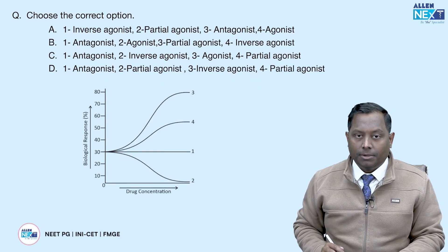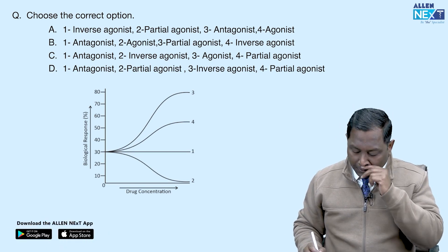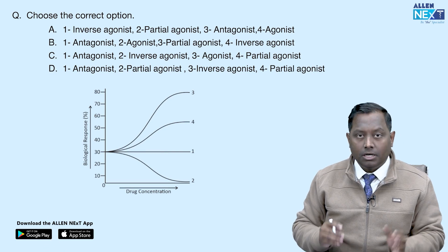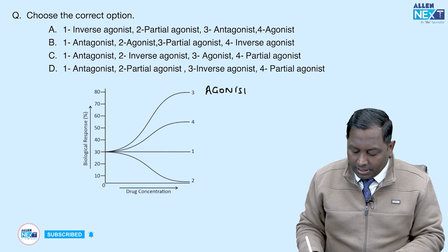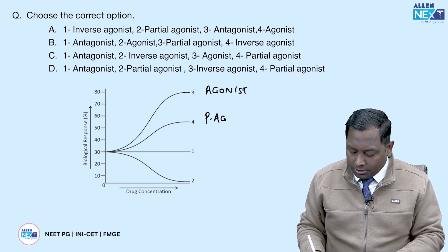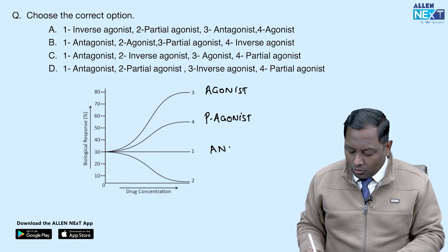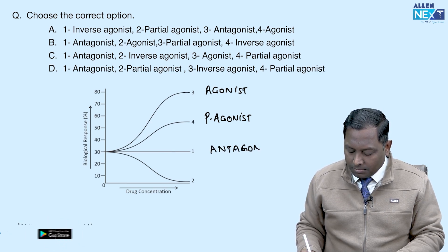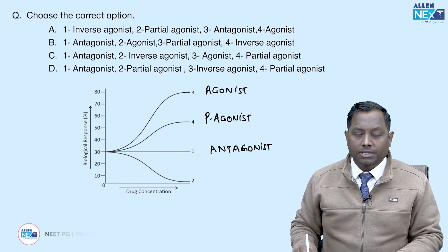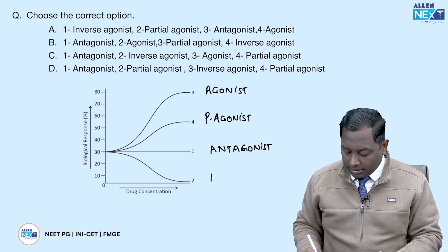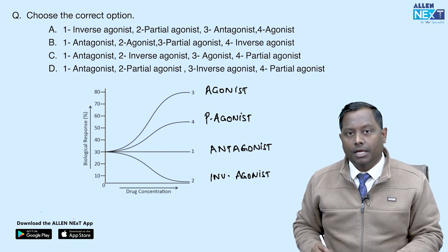The very first question is: choose the correct option about this image. This is a question influenced by previous year INICET questions. When a drug acts at a receptor with maximal activity, we call it an agonist; sub-maximal activity makes it a partial agonist. An antagonist occupies the receptor site but produces no activity, and if something produces an opposite action, we call it an inverse agonist.